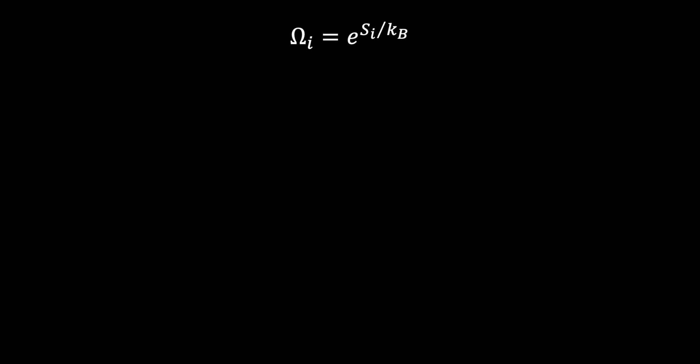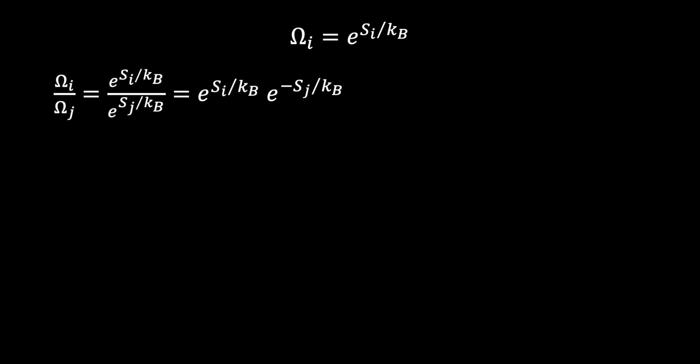Next, suppose I want to write a ratio of the number of ways that system i can be arranged divided by the number of ways that system j can be arranged. We write the expression twice — system i in the numerator and system j in the denominator. Using properties of exponents, I can condense this into one expression, and I get that the ratio equals e raised to the negative difference of the entropy of system j minus the entropy of system i, divided by Boltzmann's constant.